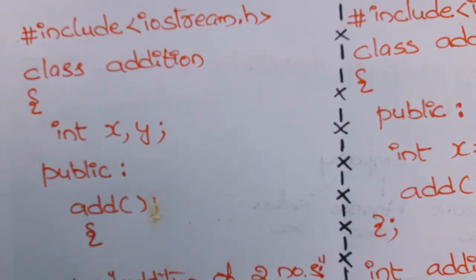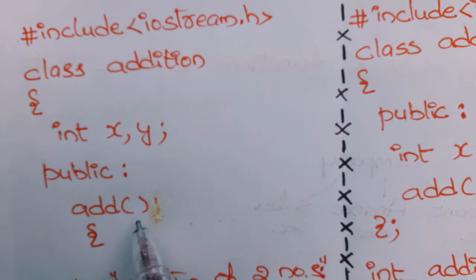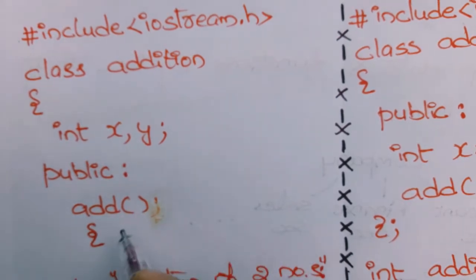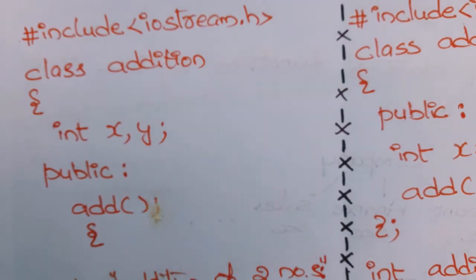After opening the curly brace, you can declare variables: int x, y. I have mentioned 'public' as the access specifier — I will explain access specifiers in another video. Next I am writing the add function body here inside the class. Whenever you write the function body, there is no semicolon.